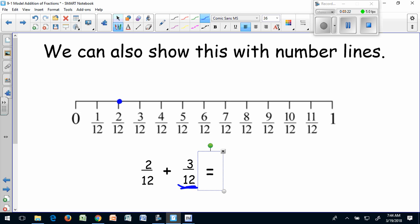I need to add three twelfths. That means I'm going to jump or move forward three twelfths. One, two, three. I started at two twelfths, and I moved forward three twelfths. And I end at five twelfths.